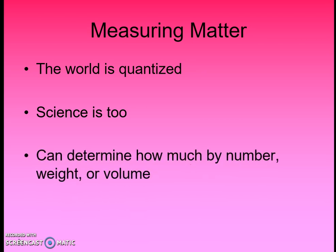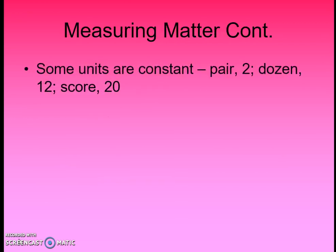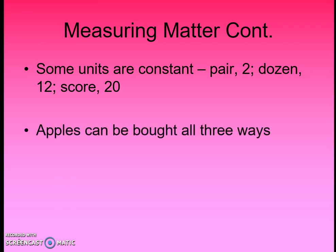In taking measurements, there are three different ways: by number or count, by weight, or by volume. In science and in life, there are a lot of quantities that have a word associated with them that represent a fixed amount — whether it be a pair, which is always two, a dozen, which is 12, a baker's dozen, which is 13, or a score, which is 20. In science, we have fixed numbers also.